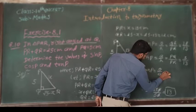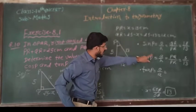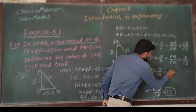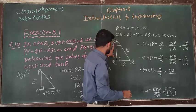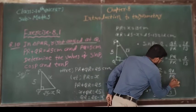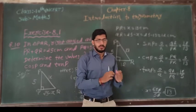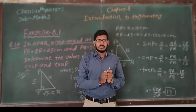And tan P is given by opposite side upon adjacent side. So opposite side of angle P is QR and adjacent side of angle P is PQ. So it gives 12 by 5. Is it clear? Thank you.